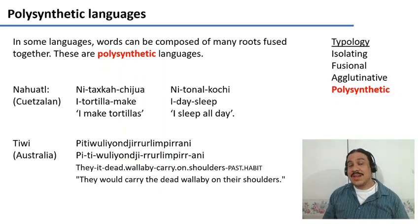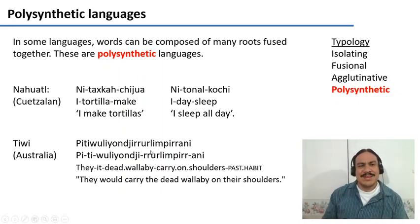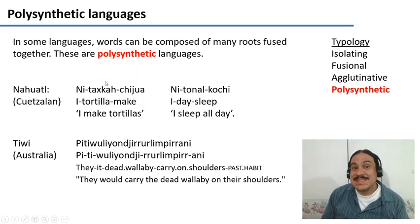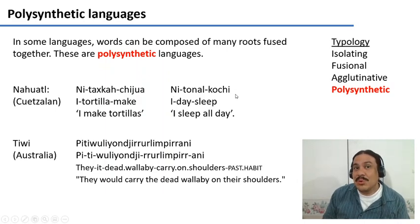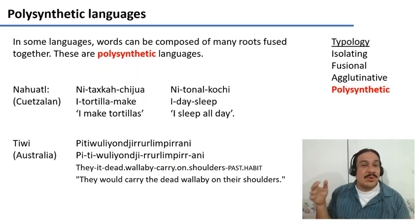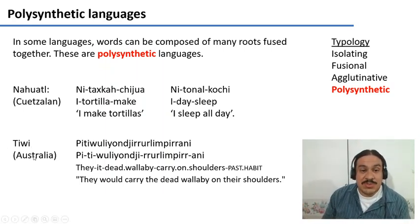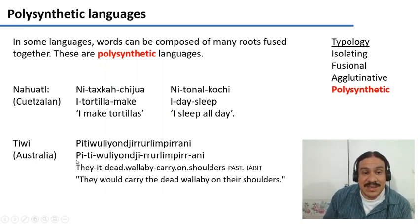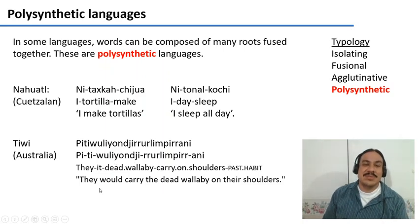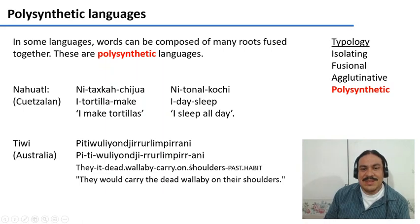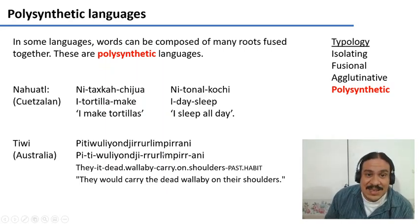Finally, in polysynthetic languages, you can have many roots and affixes combined into a single word. In Nahuatl, you can have a word like 'nitlaxkalchiwa' meaning I tortilla-make — a single word mixing direct object and verb. The word 'nitonalcochi' means I sleep all day, literally something like 'I day-sleep,' where day-sleep is a single compound word. The Australian language Tiwi is very polysynthetic — a word like 'pitiwuliyankiralimpirani' means they carried the dead wallaby on their shoulders in the past, all in one word with multiple roots and affixes.